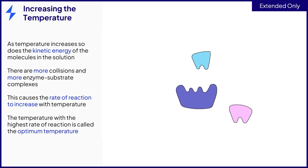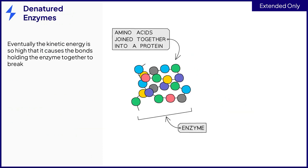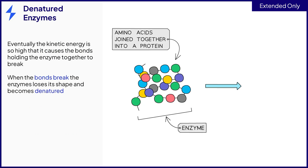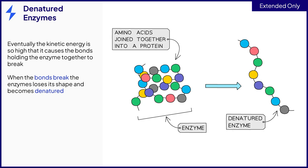The temperature with the highest rate of reaction is called the optimum temperature. Enzyme activity increases with temperature until the temperature of the solution gets high enough to break the bonds that hold together the amino acids in the protein of the enzyme. When the bonds break, the active site loses its shape, and the enzyme is said to have denatured. A denatured enzyme cannot bind to the substrate, so can no longer catalyze reactions.